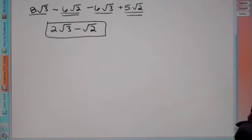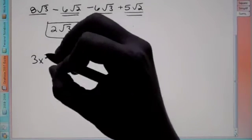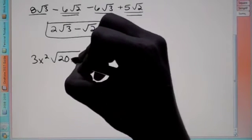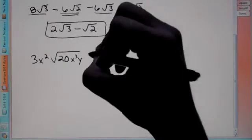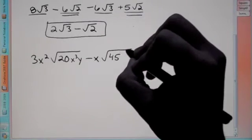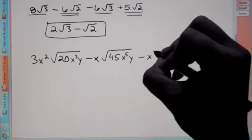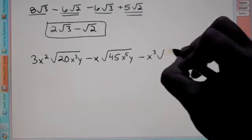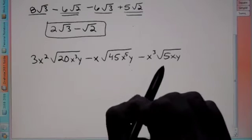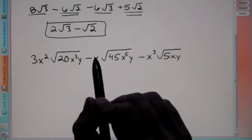Now let's get a little bit tougher and throw in some variables. We have 3x squared root of 20x cubed y, minus x root of 45x to the fifth y, minus x cubed root of 5xy. Again, we can't combine these the way they are because they have to have the same root and the same powers of exponents on the outside.